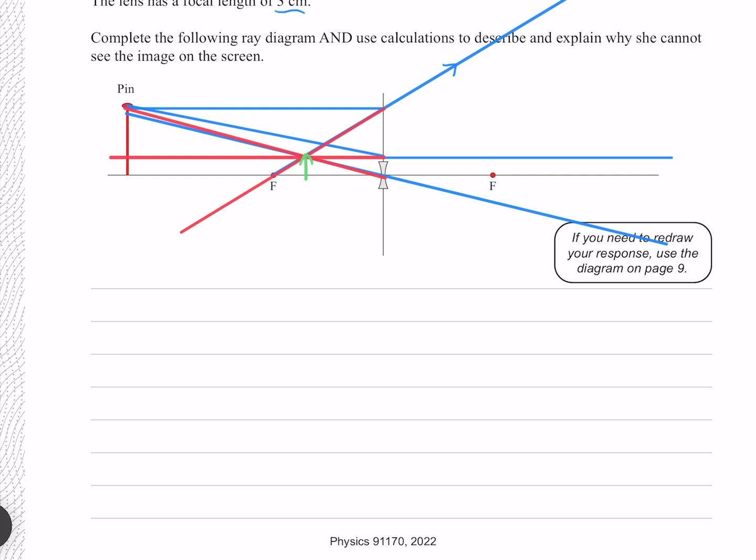And immediately we can see that the reason that she cannot project this onto a screen is because it is a virtual image, meaning that the rays don't converge in real space. But because the question asks, we must also do a calculation. What we need to show is that our DI is negative.